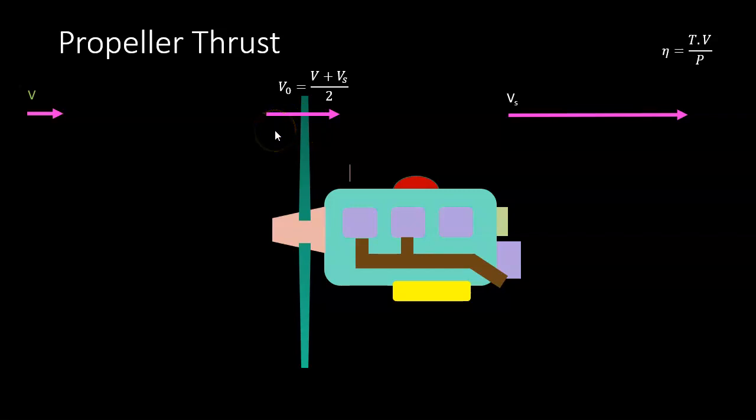In our estimate, if the aircraft is static, there would be no air coming in, so V is zero. Therefore, V0 equals Vs over 2, which when transposed means the slipstream velocity is 2 times V0.